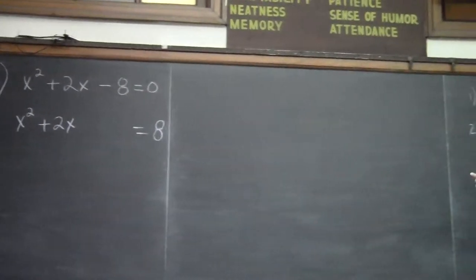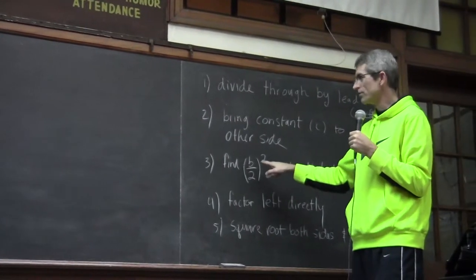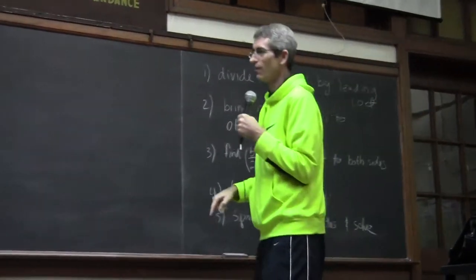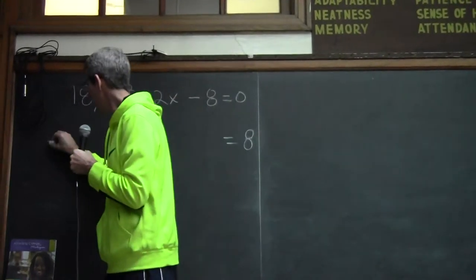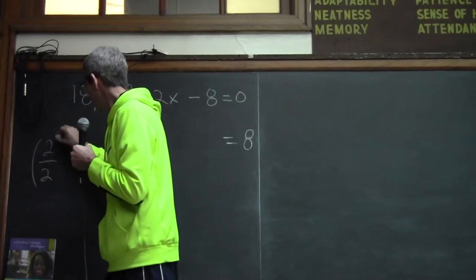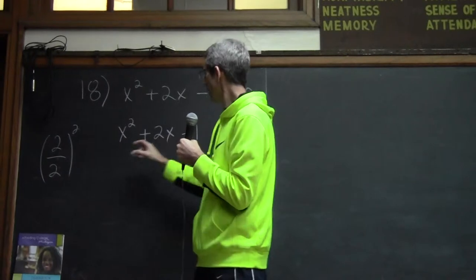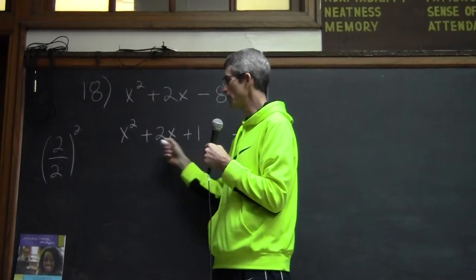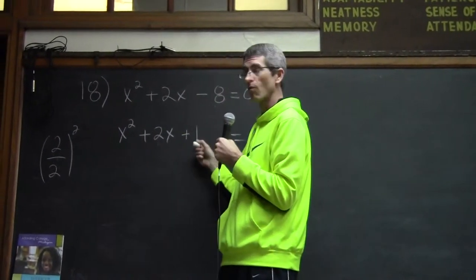So we can pick that number out. We can do trial and error, or we can know that somebody figured this out a long time ago. You take whatever the b is, you divide it by 2, and then you square it. And watch what happens. So in this case, b is 2. So we're going to take the b. I'm going to do it on the side. I'm going to cut it in half, which is 1. And I'm going to square that. So 1 squared is just plus 1.